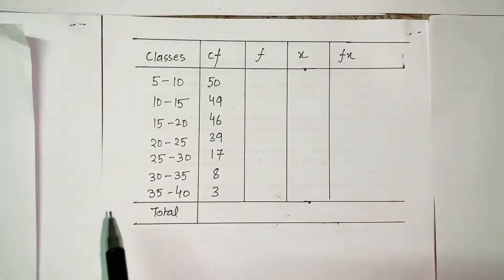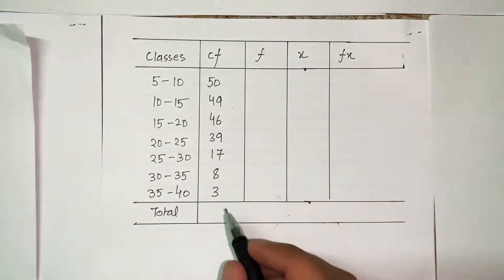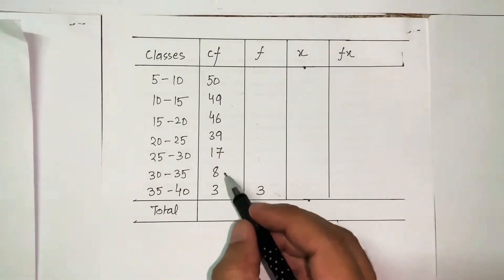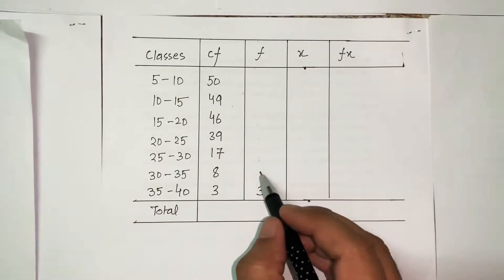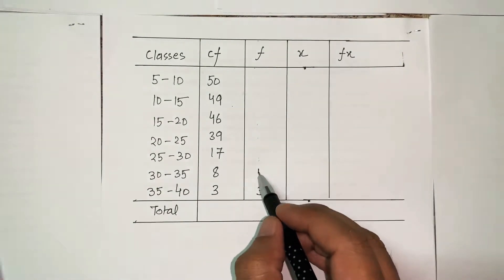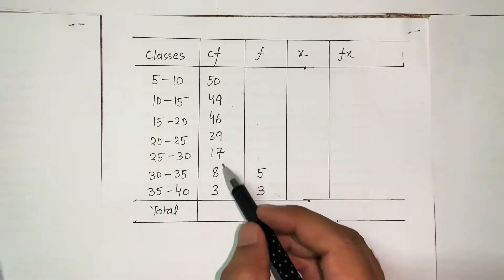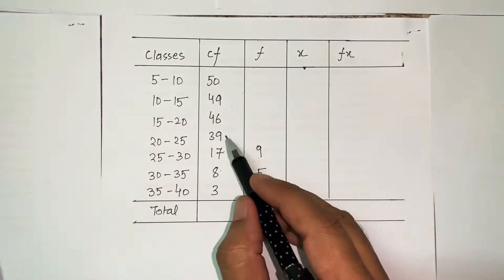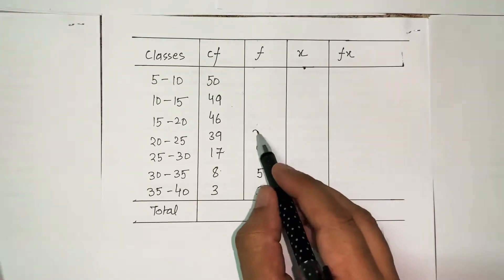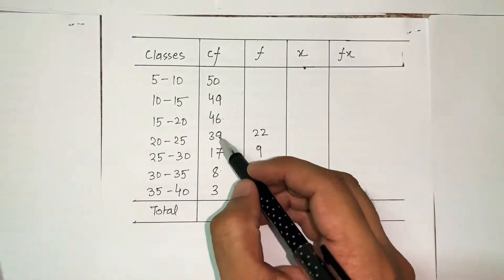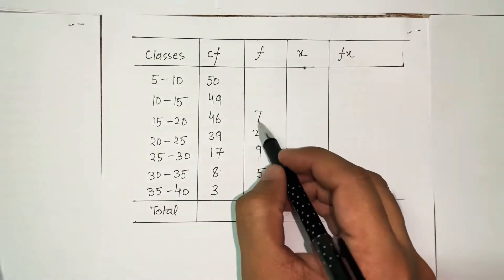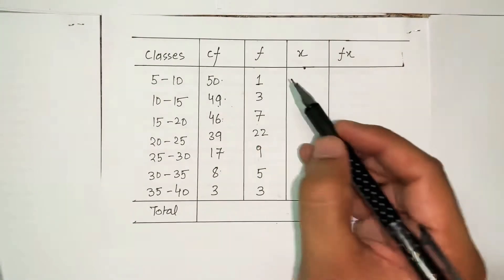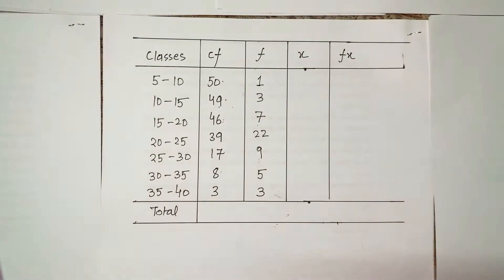Calculating simple frequencies: the first is 3, the second is 8 minus 3 = 5, next is 17 minus 8 = 9, then 39 minus 17 = 22, then 46 minus 39 = 7, then 49 minus 46 = 3, and finally 50 minus 49 = 1.